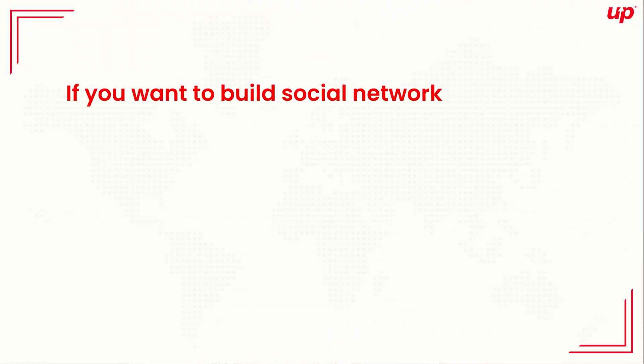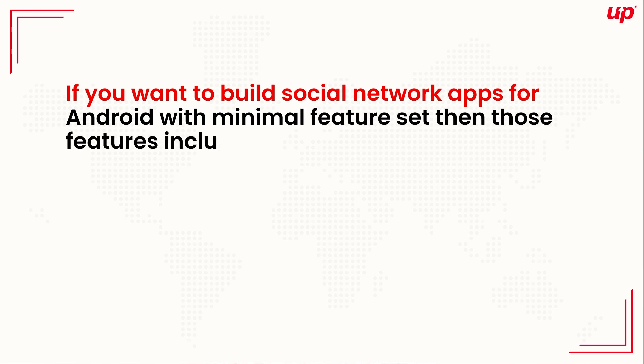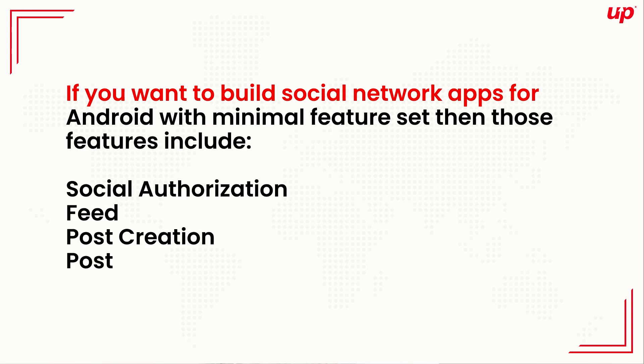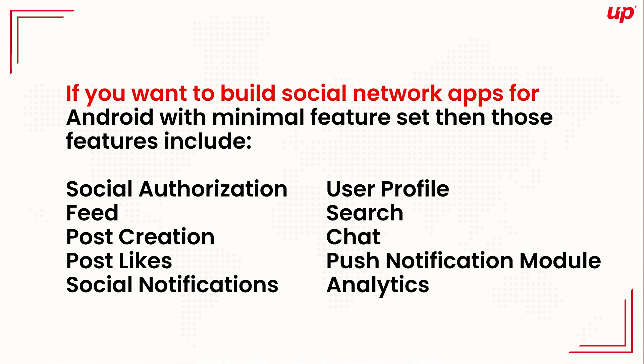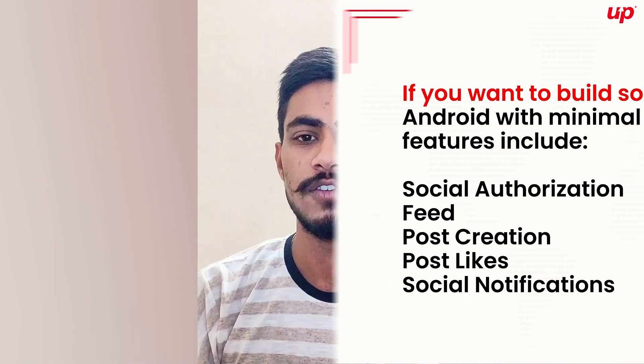If you want to build a social networking app for Android with a minimal feature set, the features should include social authorization, feeds, post creation, post like, social networking, user profile, file search, chat, push notification modules, and analytics. These are some of the basic features and information required to build a social networking application in Android.